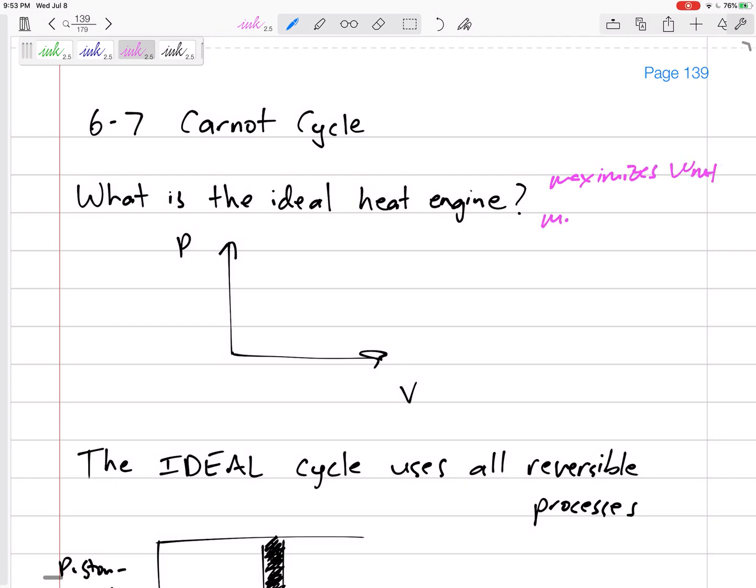So how could we have an ideal heat engine that maximizes the net work that we get out? It minimizes the rejected Q, the QL. It minimizes that rejected heat.